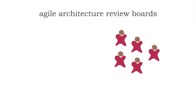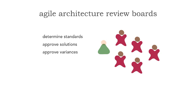Most companies, especially large companies, have architecture review boards. These are boards that consist usually of architects led by some sort of mediator. The Architecture Review Board does a lot of things within a company, but primarily they determine the standards used within the department or company. They also approve solutions that architects or development teams approach them with, approve variances of standards — for example, if Angular is not a standard yet you want to use it on a project, you'd approach an ARB for an approved variance — and they provide guidance and recommendations based on particular solutions.